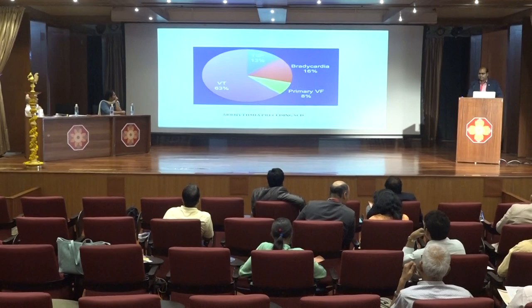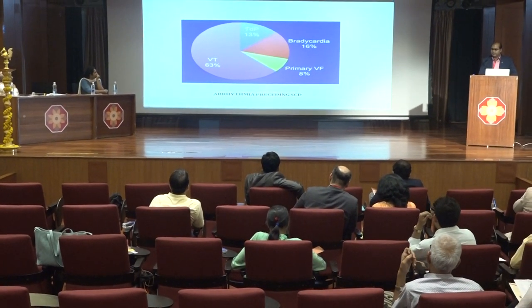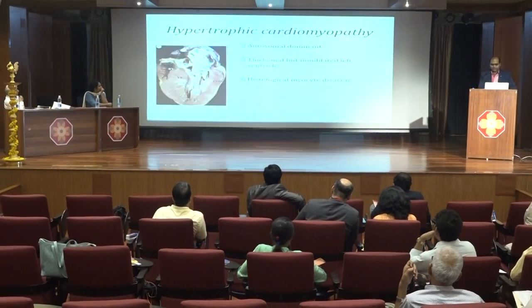Sudden cardiac death is defined as sudden death occurring within one hour of symptom onset of cardiac origin. The causes can be divided into structural disease and ion channelopathies. Ventricular tachycardia is the most common arrhythmia which precedes sudden cardiac death. Others include torsades de pointes, bradycardia, and primary ventricular fibrillation.